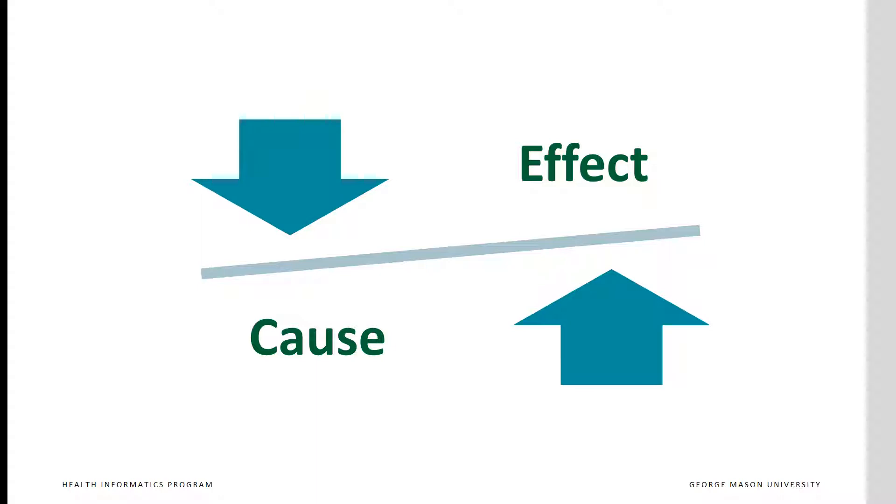When two variables are associated, changes in the effect modify the likelihood of observing the cause and vice versa. Think of association as a seesaw. In causal relationships, this is not necessarily true. Changes in effect do not change the frequency of the cause. The seesaw model does not apply, as changes in the effect do not cause any change at all. Only changes in the cause affect the frequency of the effects.